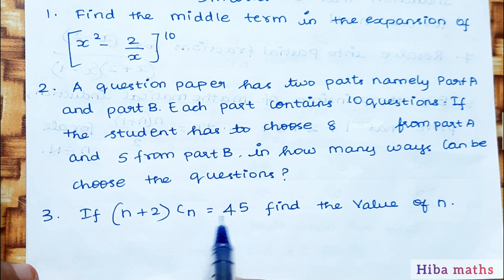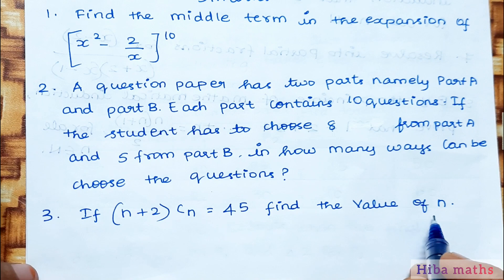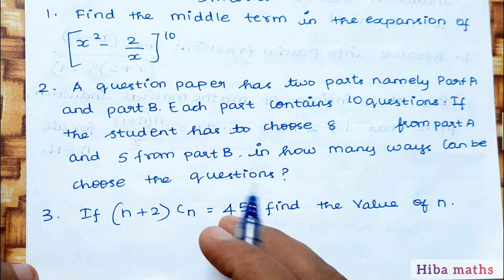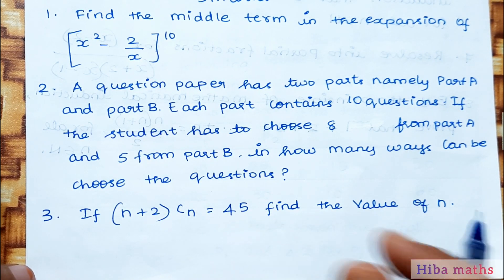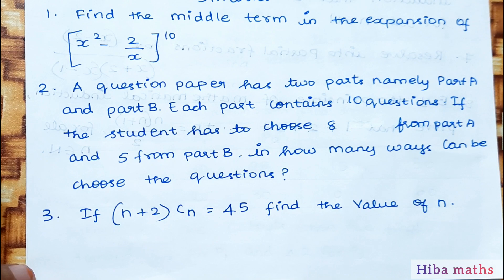Third question: if (n+2)Cn is equal to 45, then find the value of n. This is slightly complex, so it's given as 3 marks instead of 2 marks.